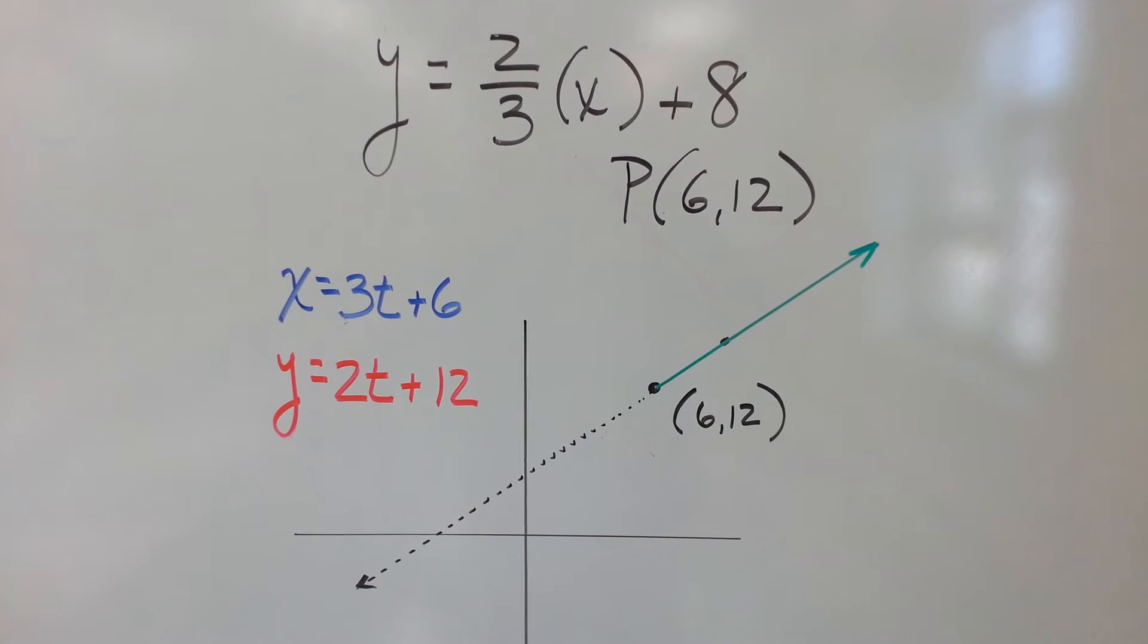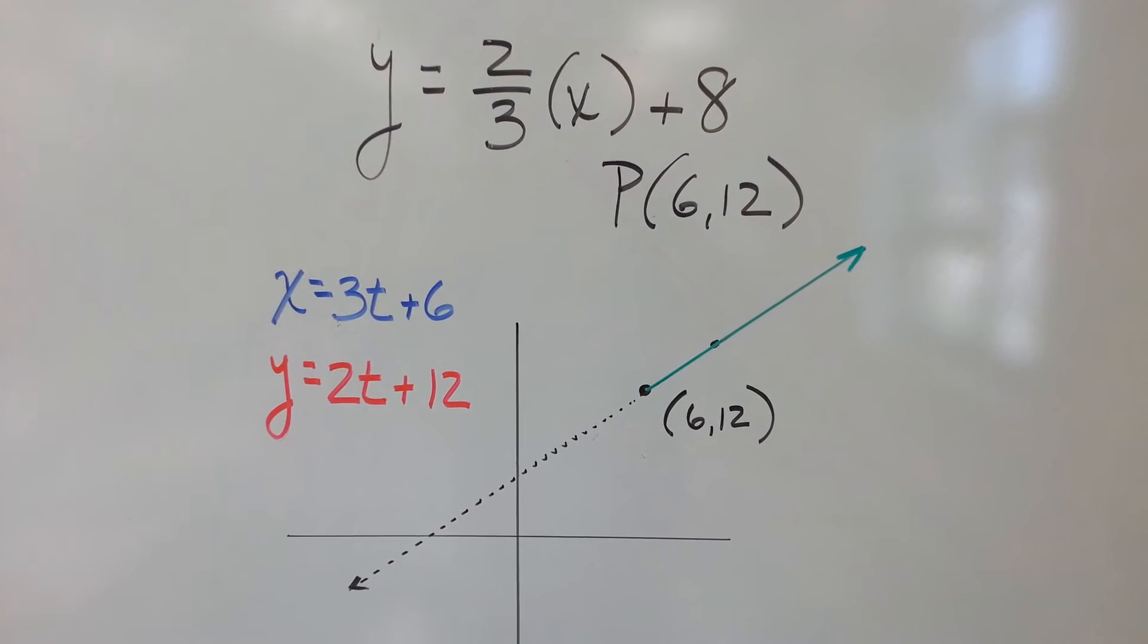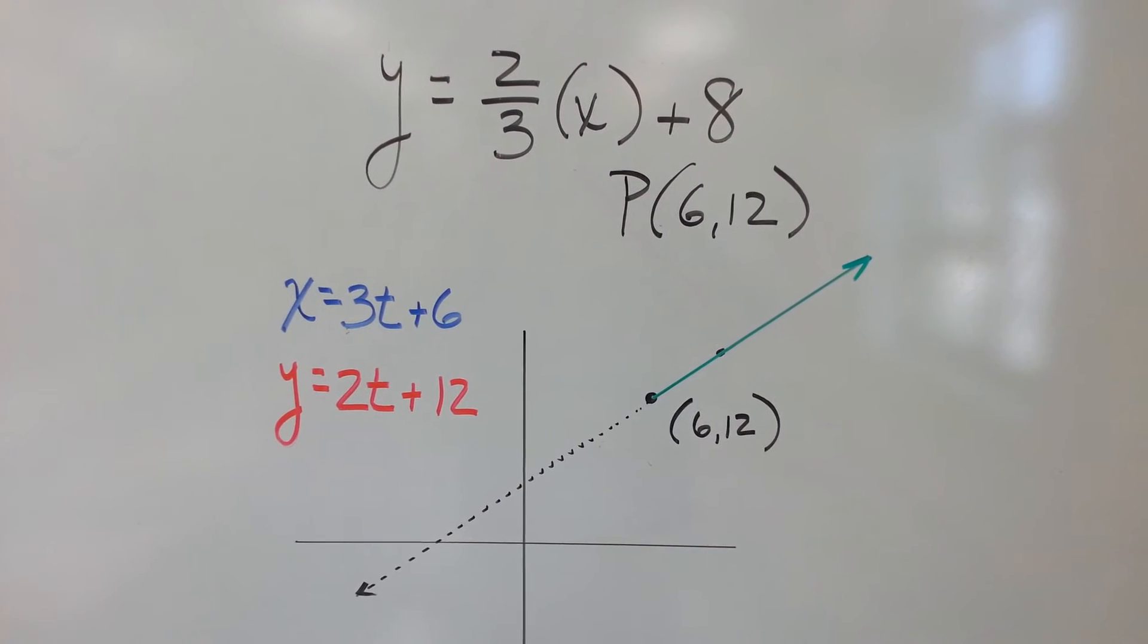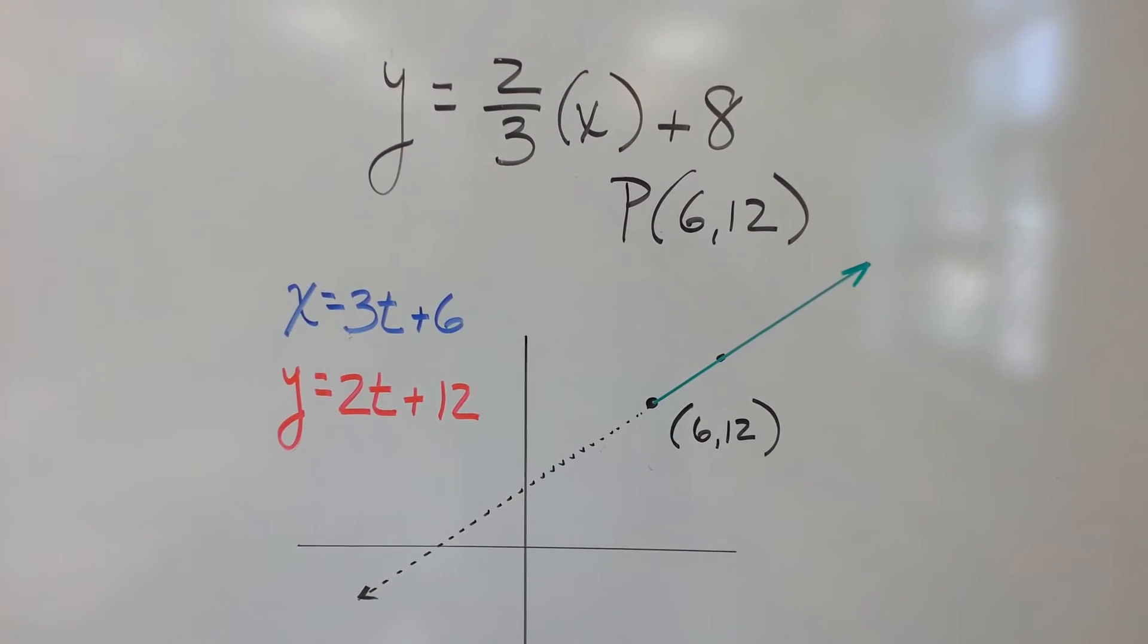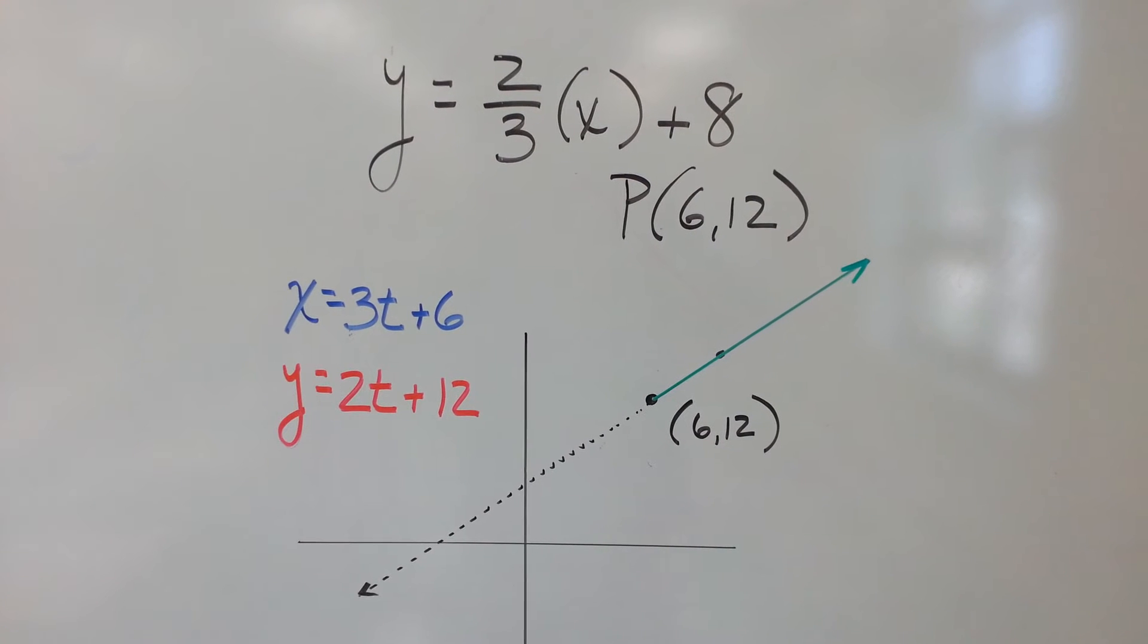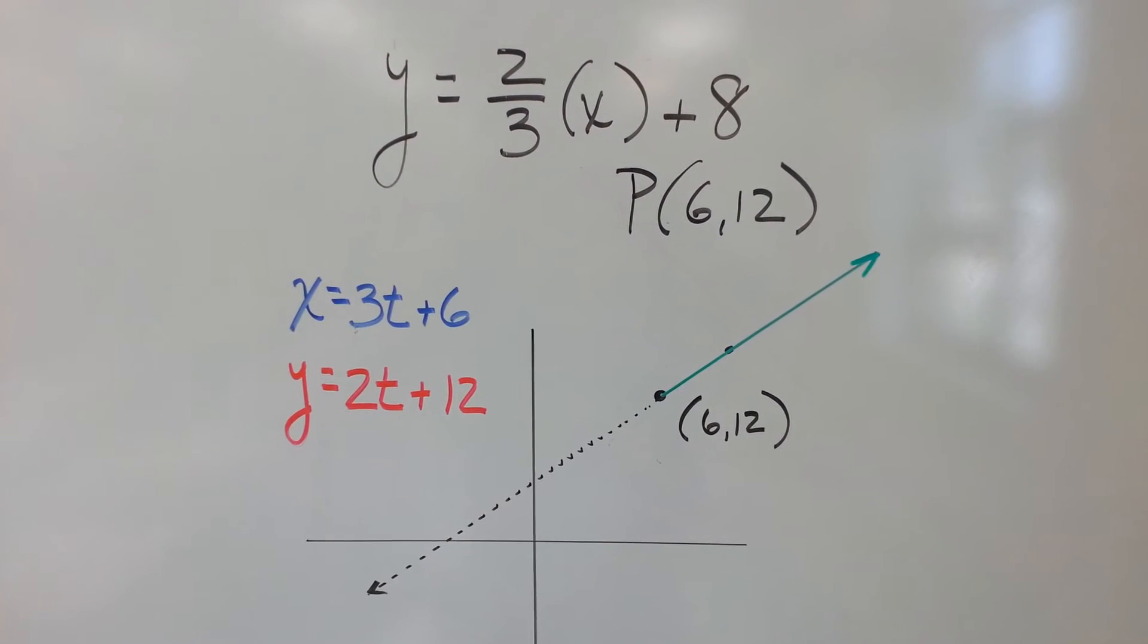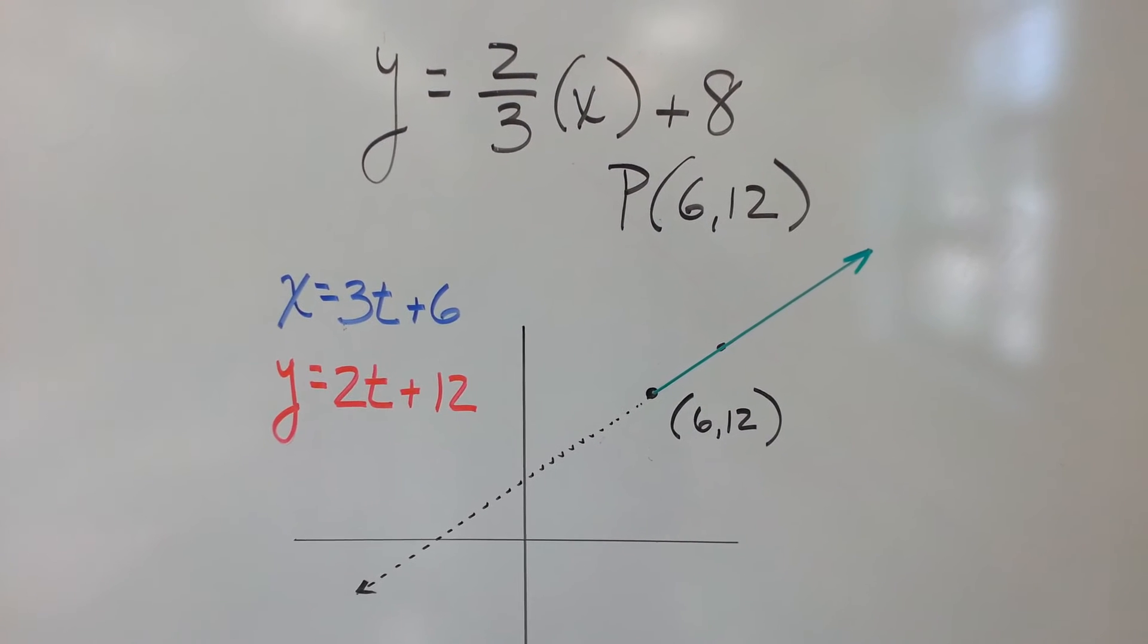So that means on the x, if you look down on the blue, on the x-axis, per unit of time—minute, hour, days, whatever you're counting—per unit of time, this thing moves 3 on the x-axis, starting at the point, the x part of our point 6.